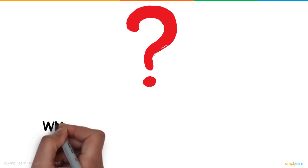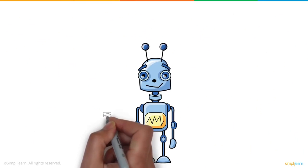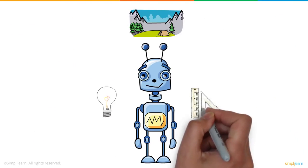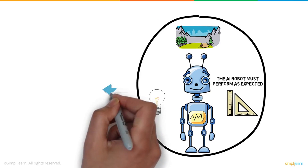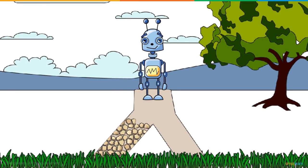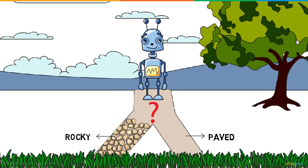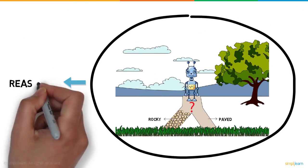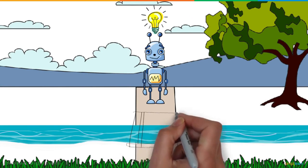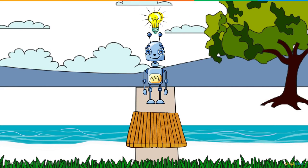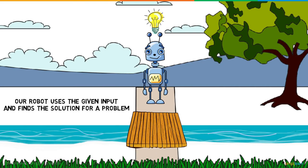The real question is, what does an AI do at its core? Here is a robot we built in our lab, which is dropped onto a field. In spite of variation in lighting, landscape, and dimensions of the field, the AI robot must perform as expected. This ability to react appropriately to a new situation is called generalized learning. At a crossroad, one paved and one rocky, the robot must determine which path to take — this portrays reasoning ability. Using a plank as input, the robot crosses a stream, demonstrating problem solving.